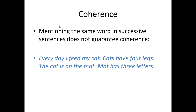Notice that mentioning the same word in successive sentences does not guarantee that it will be coherent. Consider: 'Every day I feed my cat. Cats have four legs. The cat is on the mat. Mat has three letters.' Even though every sentence in this text has something in common with the one that came before it, it still doesn't seem to be about anything. It has no coherence.